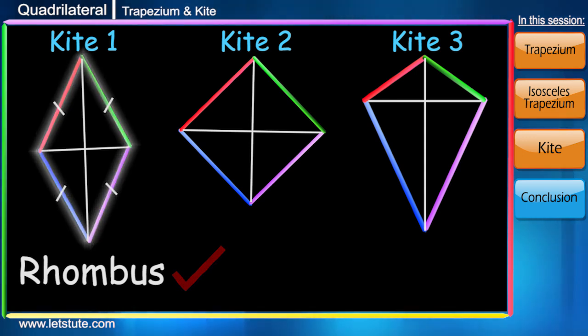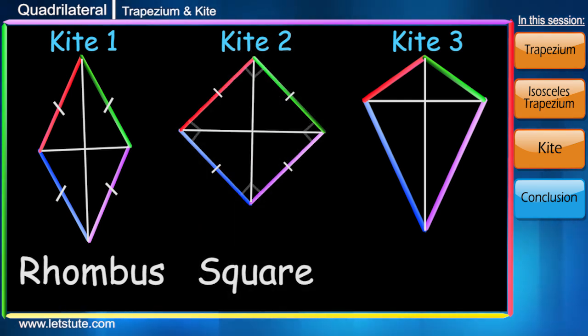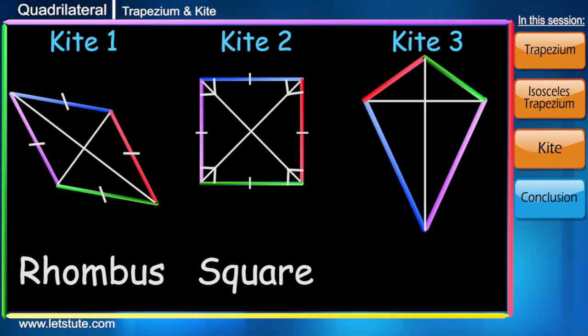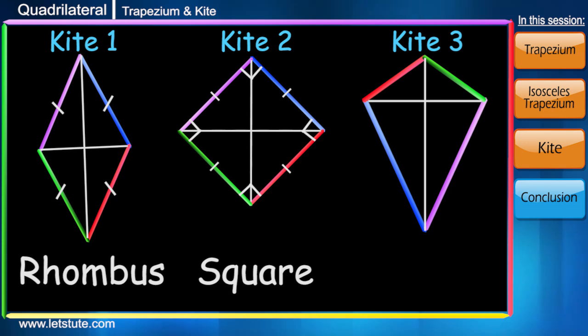It could have been a square also like my second kite as it makes 90 degrees of angle at the corners. Simply if we rotate or flip a rhombus or square, it looks like the shape of a kite only.